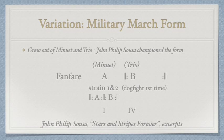One final version is the military march form. It's sort of binary, sort of ternary, and it is actually a descendant of the minuet and trio form, which we recall is compound ternary. So after a short fanfare from Stars and Stripes Forever, the A section splits into two subsections called the first strain and the second strain.